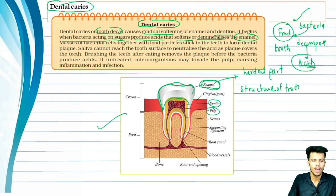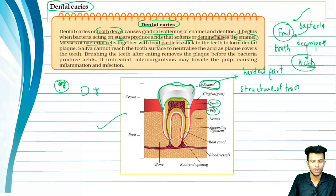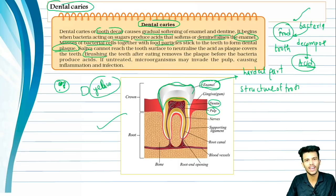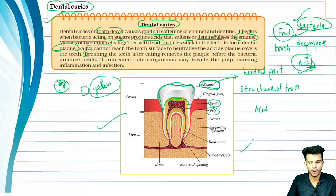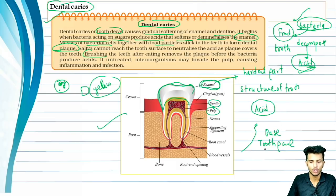There are masses of bacterial cells with food particles that stick on the surface of the tooth — this is called plaque. The solution is simple: brush your teeth. If there is no food left on the teeth, bacteria cannot decompose anything and cannot produce acid. Toothpaste acts as a base to neutralize the acid produced by bacteria, preventing tooth decay.